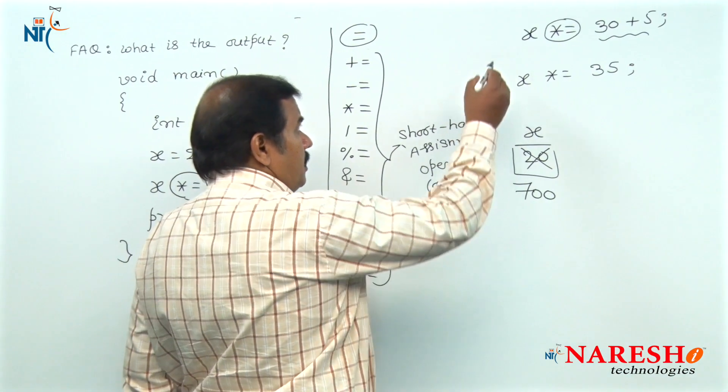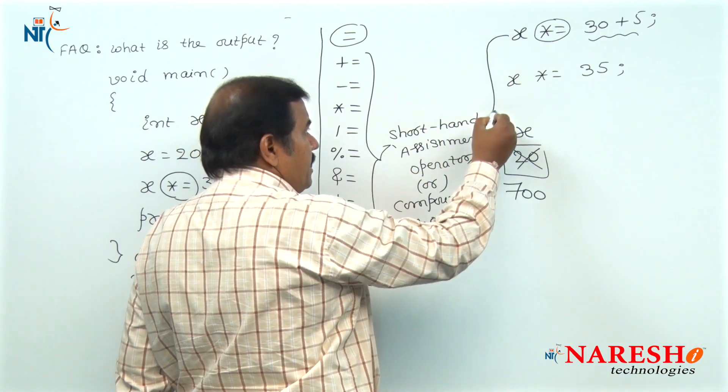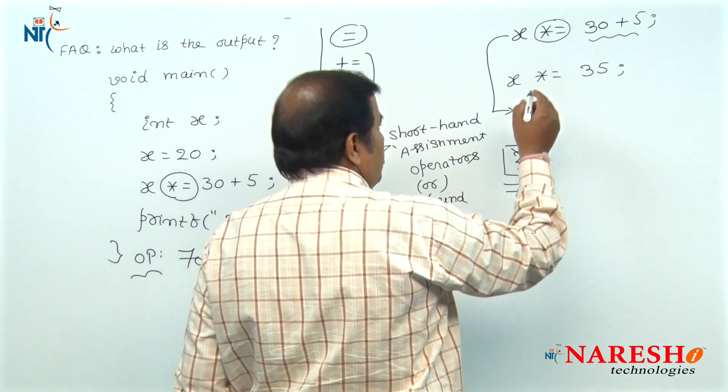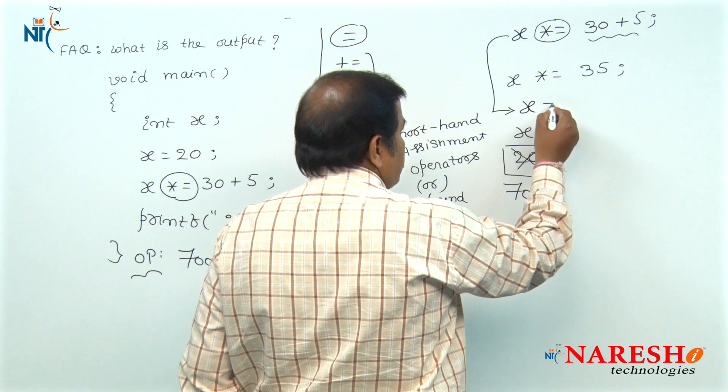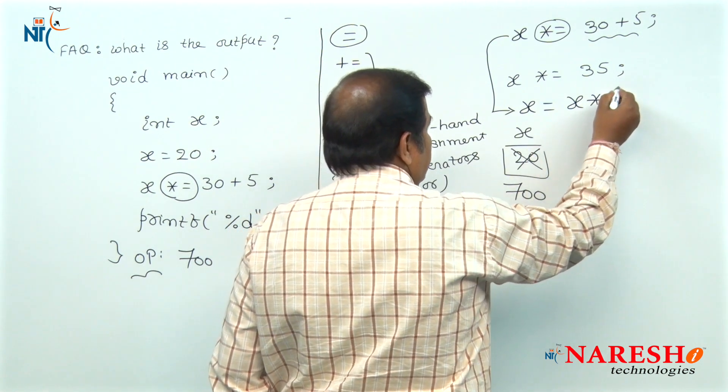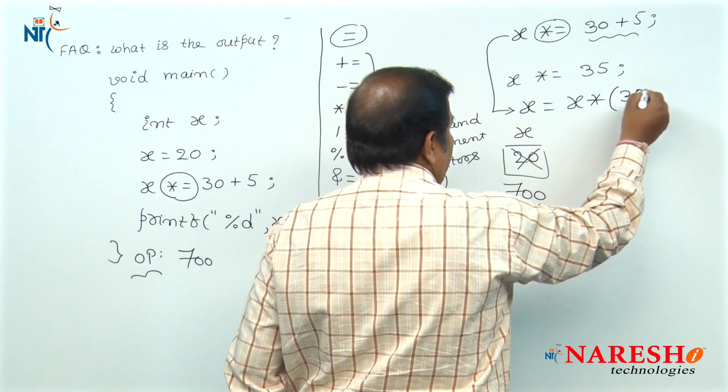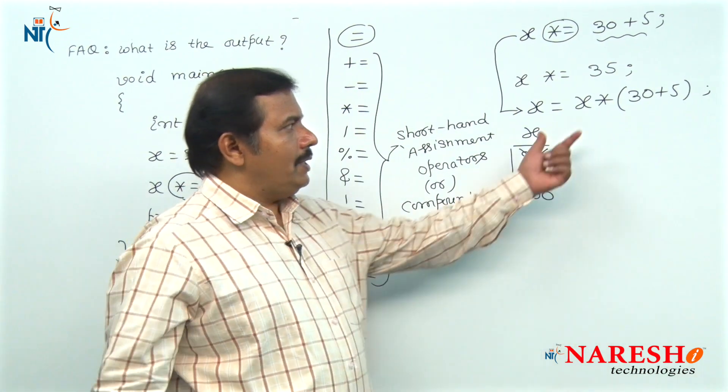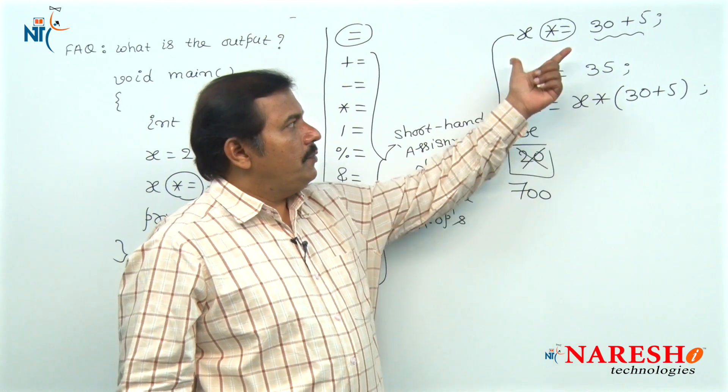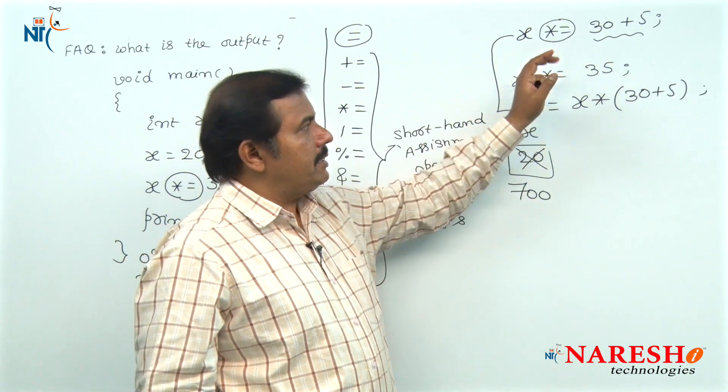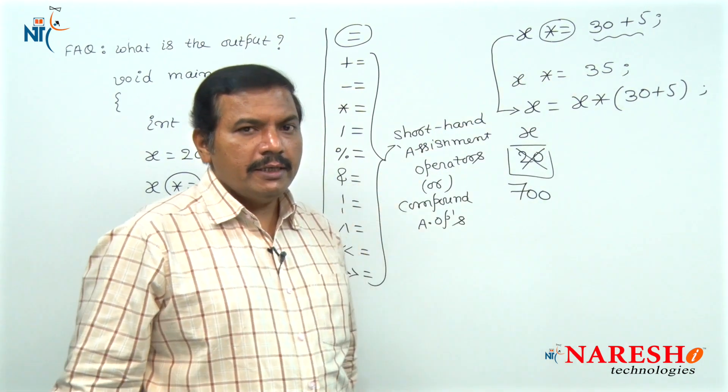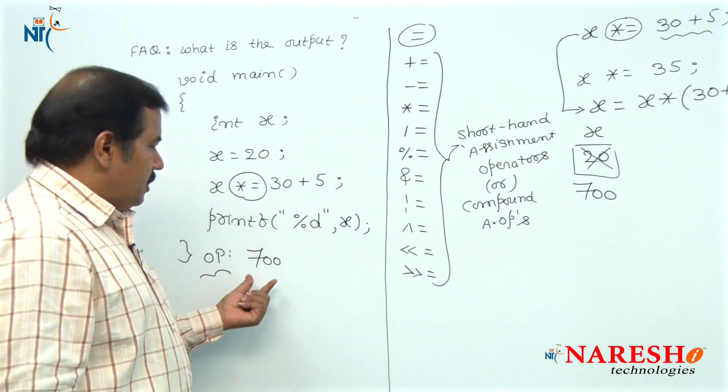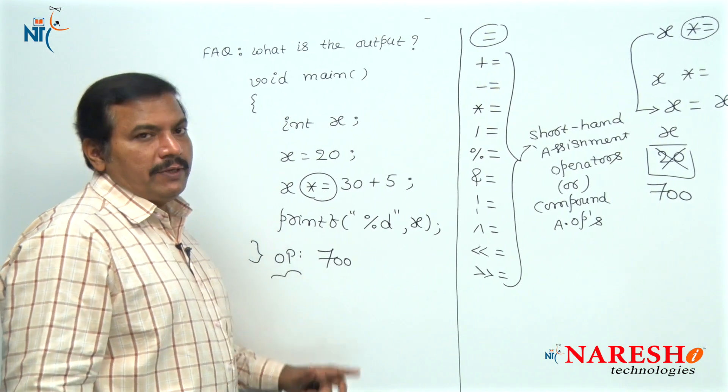The alternative assignment statement for this assignment expression is x is equal to x into within parenthesis 30 plus 5. So, after executing this code, the final output displayed is 700.